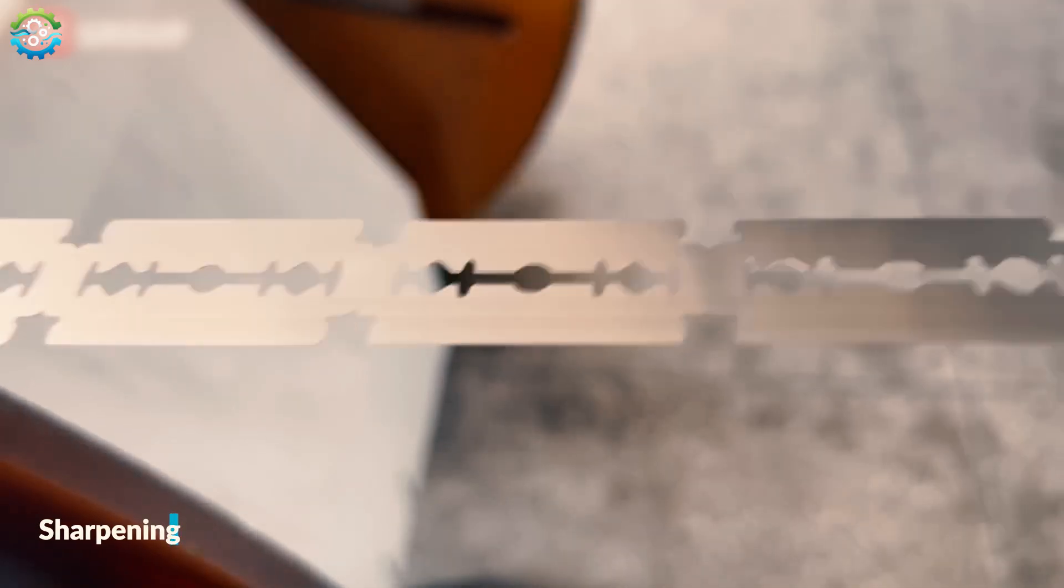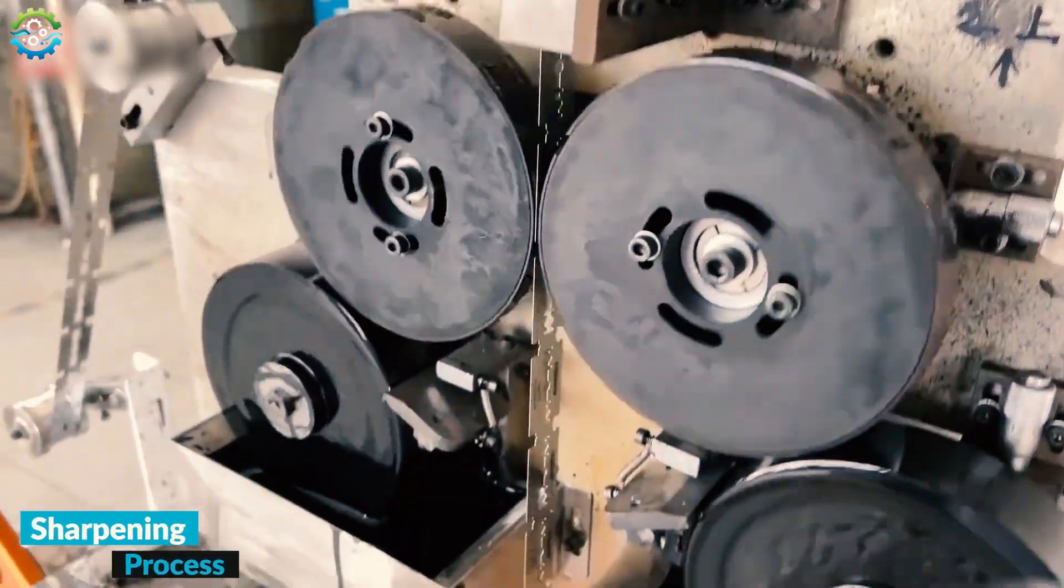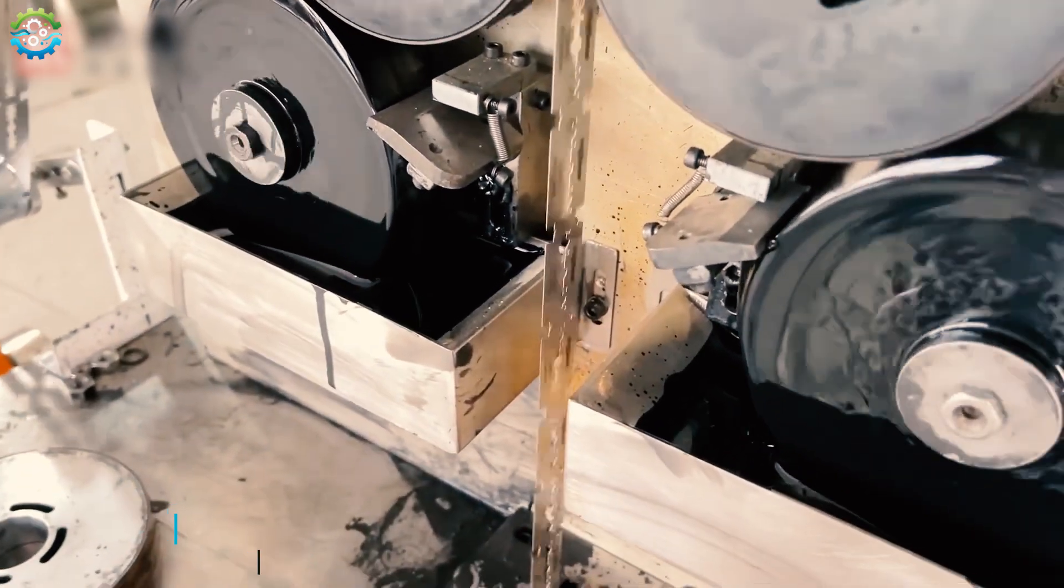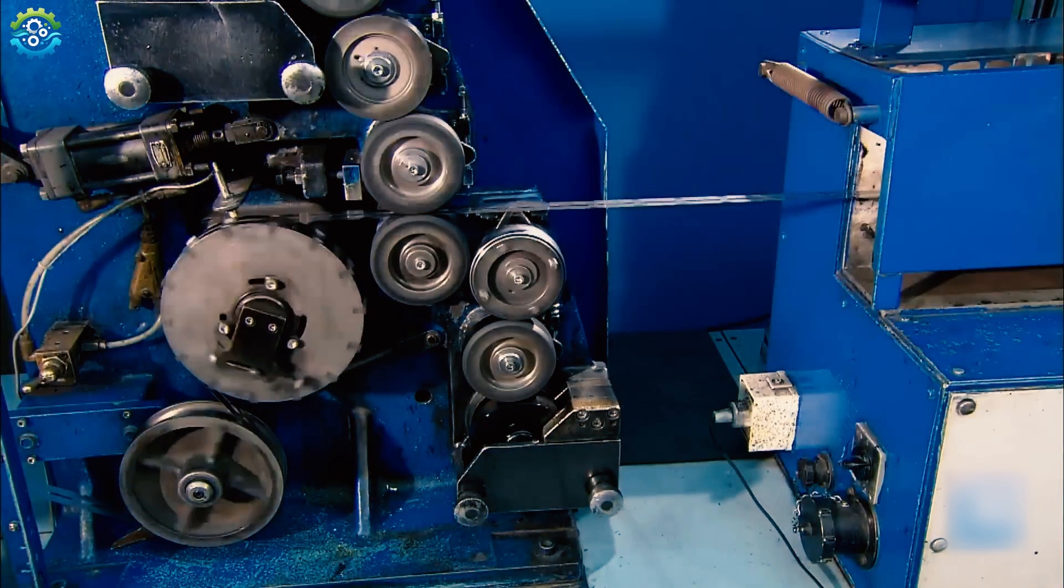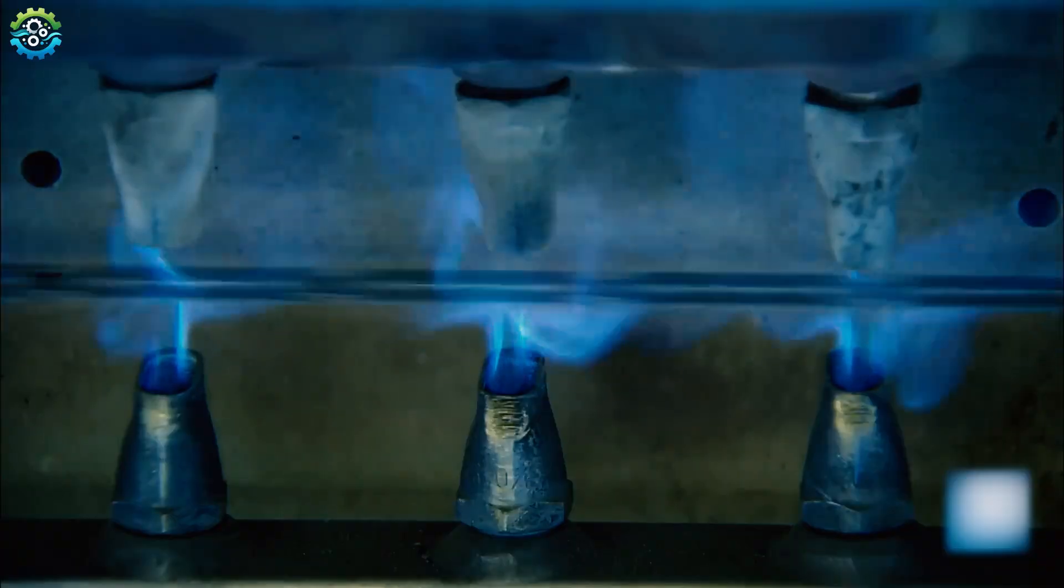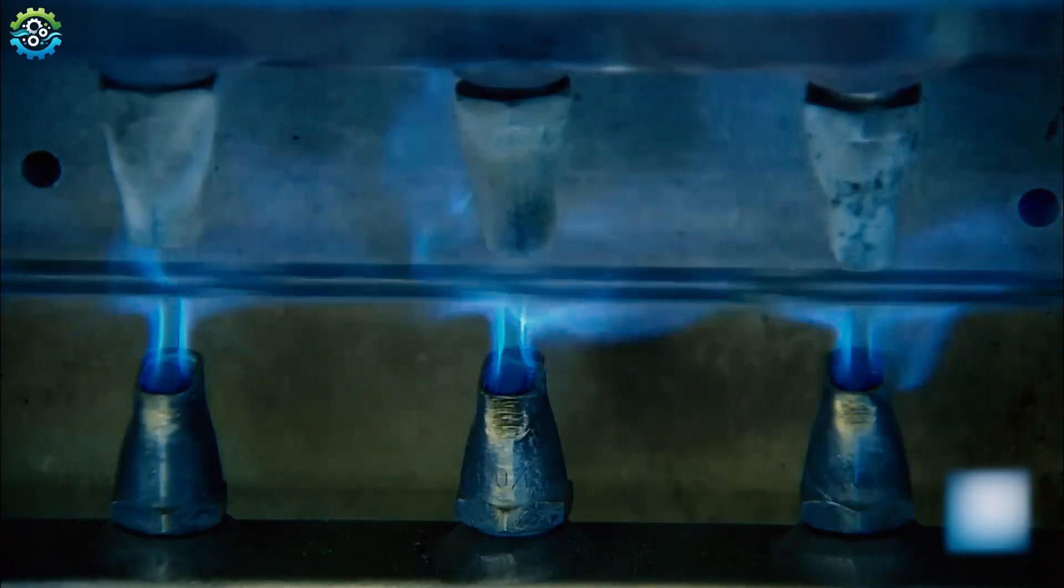Then in the next process, the hard blades undergo a printing process, which prints the brand name and marks on the blade. After printing, the blades are passed through the gas flame, which instantly dries the ink.